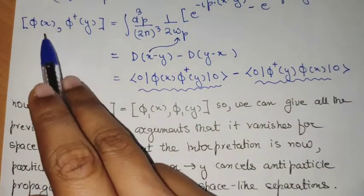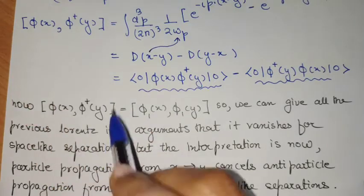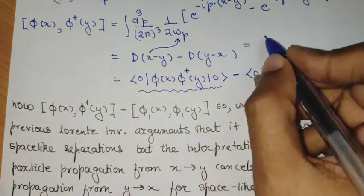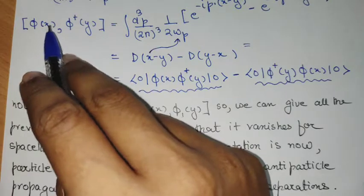So you see, if I didn't have this dagger operator, this would have been zero and not equal to dx minus y. The presence of this dagger operator makes this non-zero and gives the relation dx minus y.